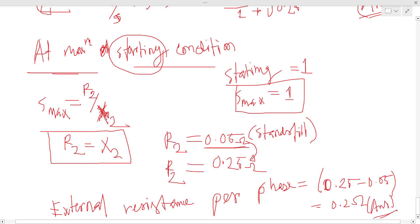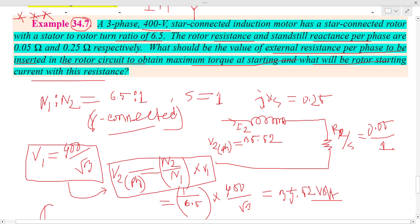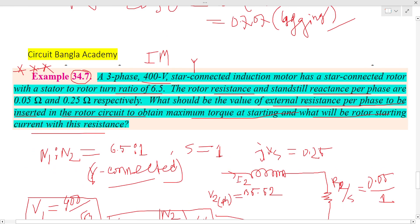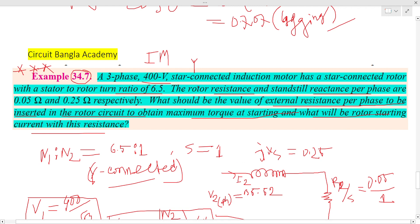The answer is 0.2 ohm. I hope this confusing type of math problem is now clear. The answer is confirmed as 0.2 ohm external resistance per phase. Now for the rotor starting current — what will be the rotor starting current at this resistance condition?